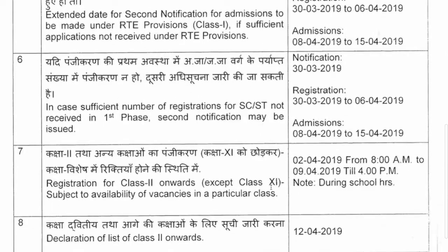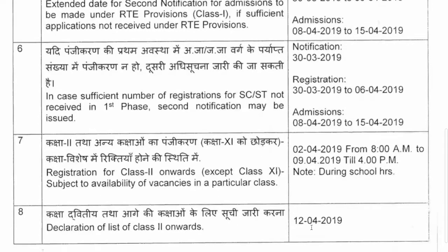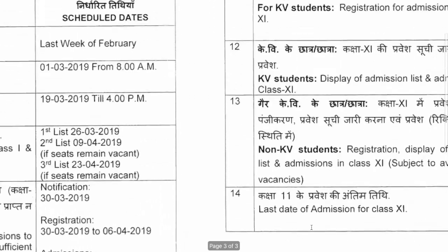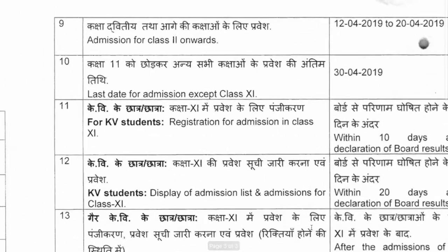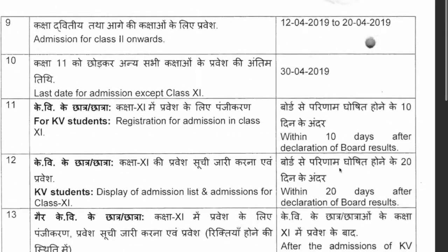Admission for Class 2: 12th April 2019 to 24th April 2019. Last date for admission except Class 11: 30th April 2019. For KV students, registration for admission in Class 11 is within 10 days after declaration of board results.